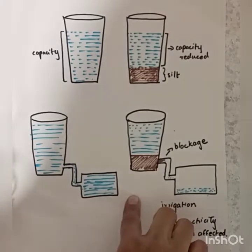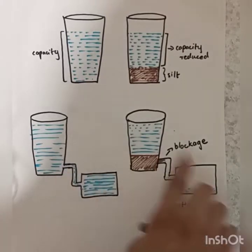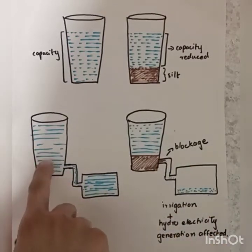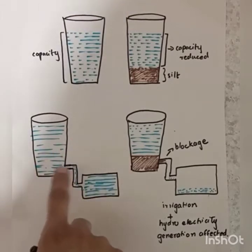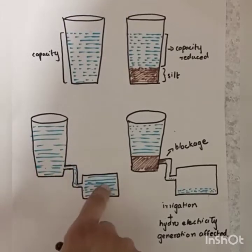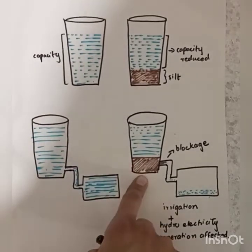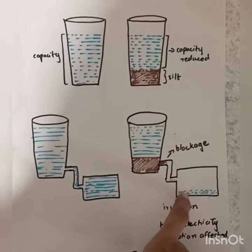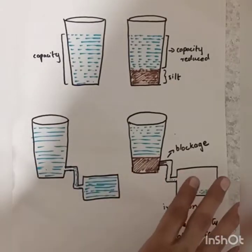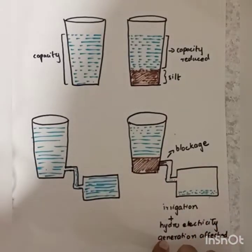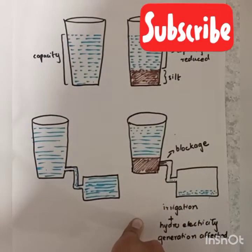Another issue we can understand from the same figure: suppose this glass is a dam and we need water for hydroelectric generation. If there is silt deposited at the bottom, we will not have enough water for hydroelectric generation, or there will not be free flow of water for the generation of electricity — that again hampers the purpose of the dams.